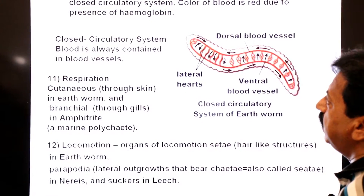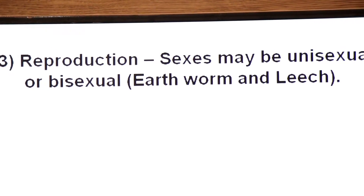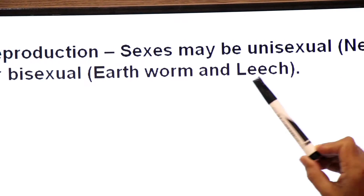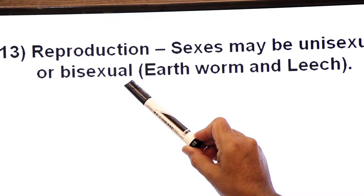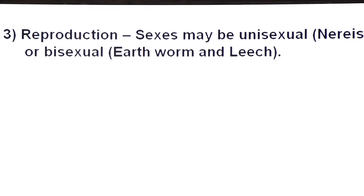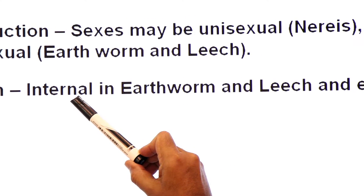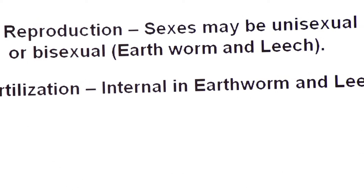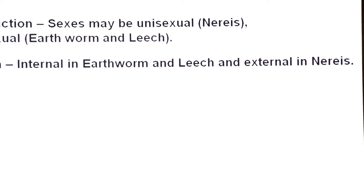Now we will discuss the classification of Annelida into its classes. Regarding reproduction in annelids: the sexes may be unisexual — meaning sexes are separated, as in nereis — or bisexual, meaning both sexes are present in the same animal, with both testes and ovaries present. Earthworm and leeches are bisexual members of phylum Annelida. Fertilization: in earthworm and leech, fertilization is internal. In nereis, fertilization is external.